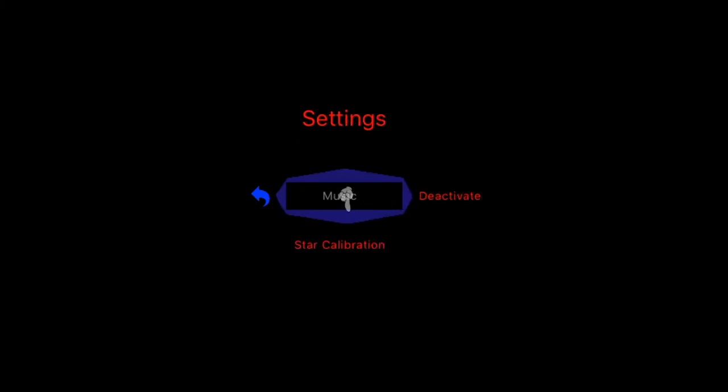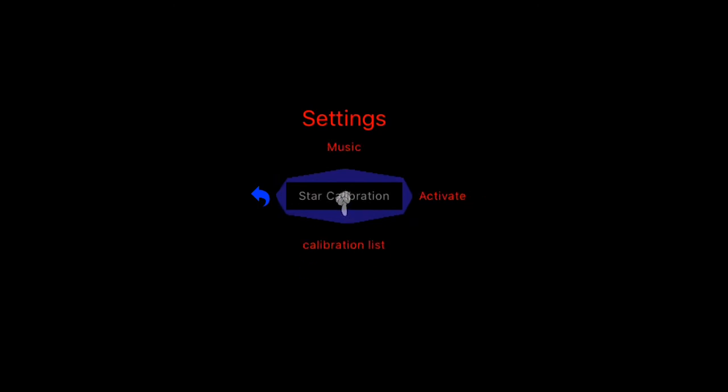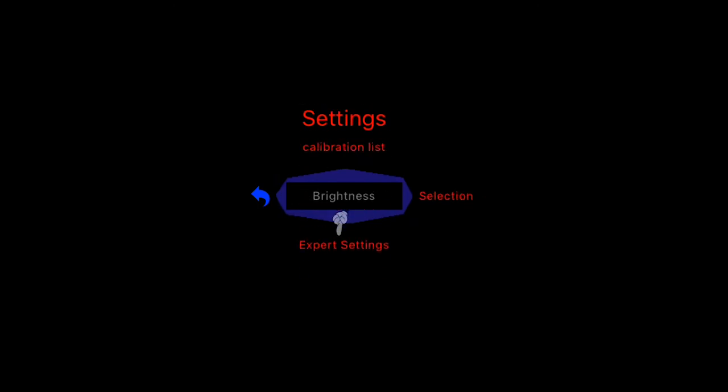At the end of the menu, you will find settings where you can adjust what you see in Expert mode, you can recalibrate the device, and you can search for planets, galaxies, and other objects in the night sky.